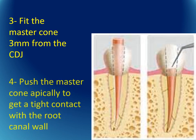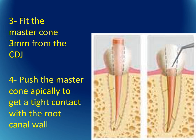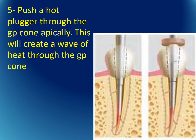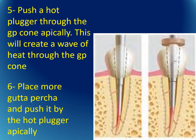As seen here, we push the master cone apically to achieve tight contact with the root canal wall. A hot plugger is then pushed through the gutta-percha cone apically, creating a wave of heat through the cone. Additional gutta-percha is placed and pushed apically with the hot plugger to fill the root canal space.